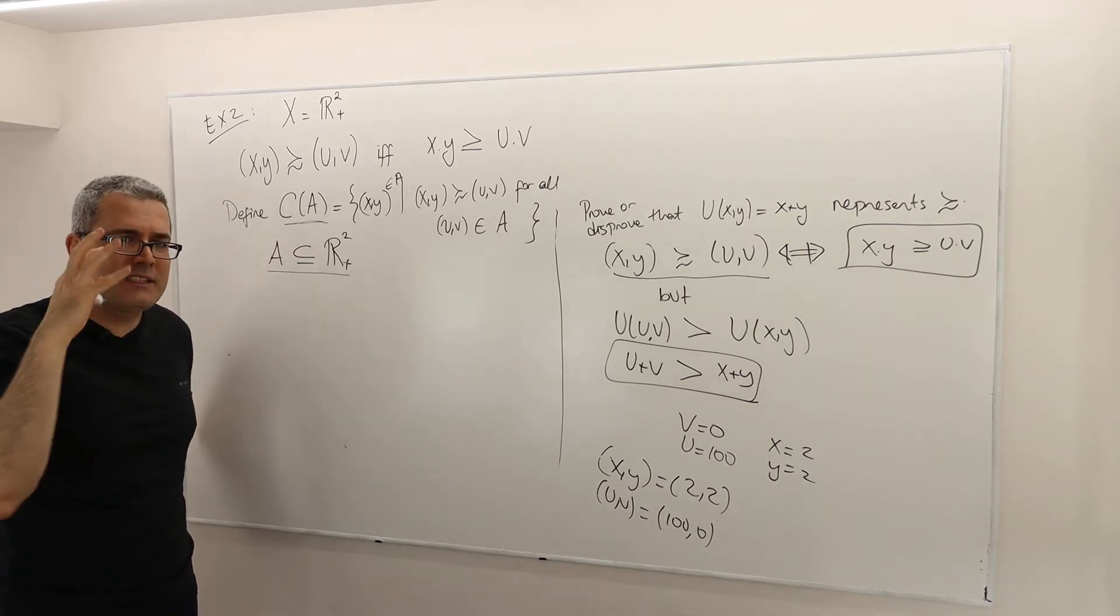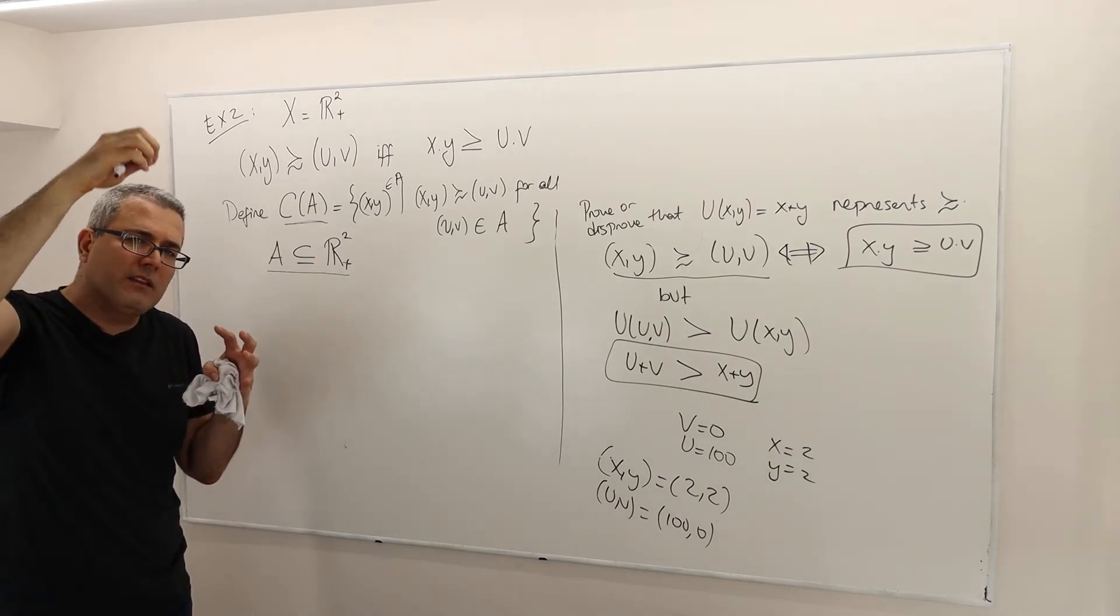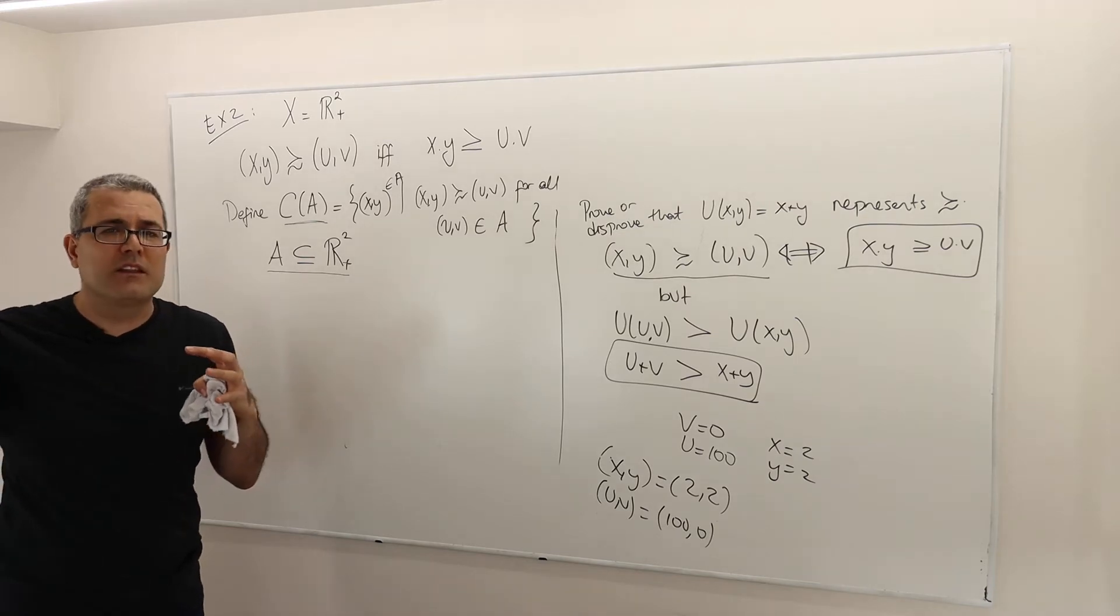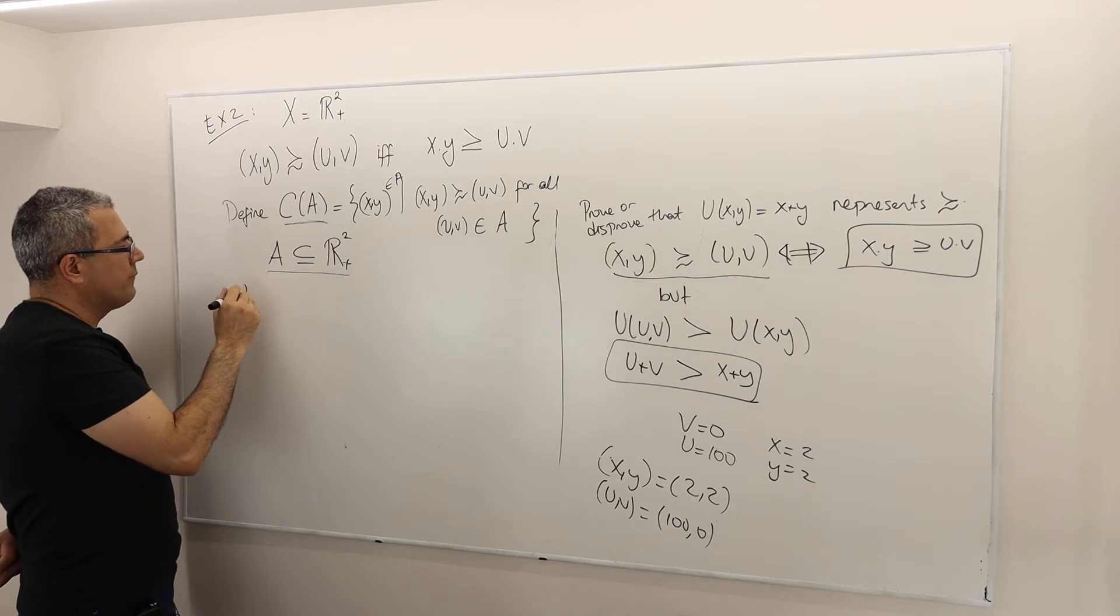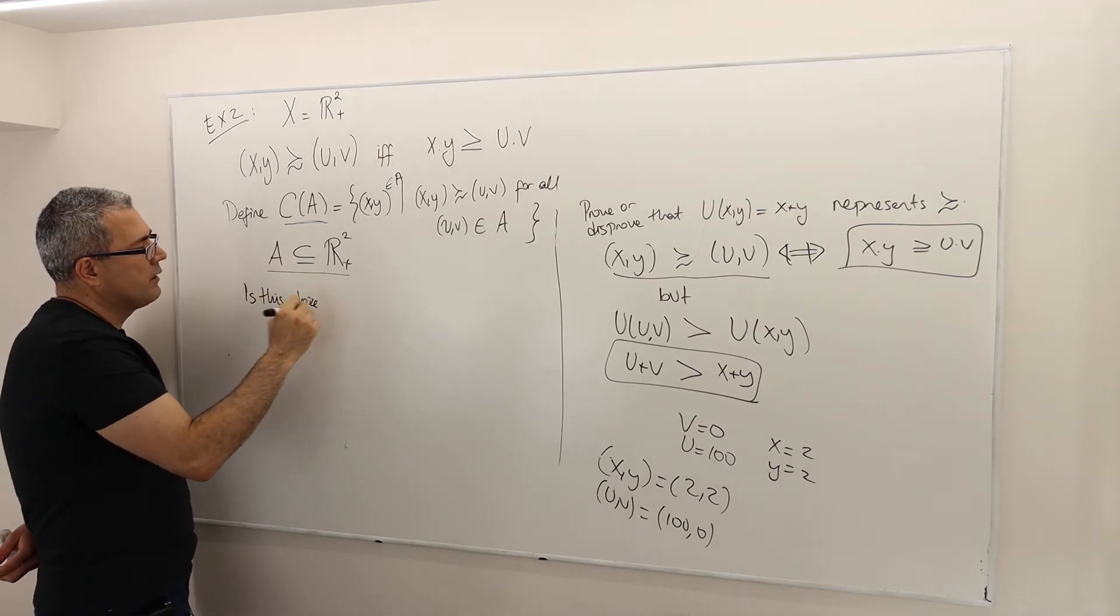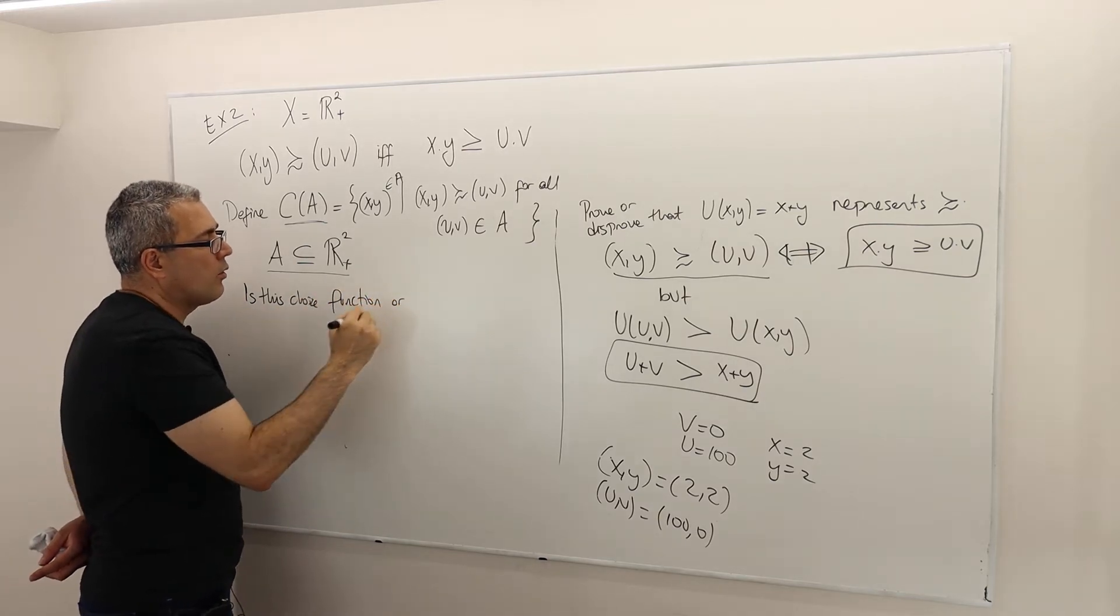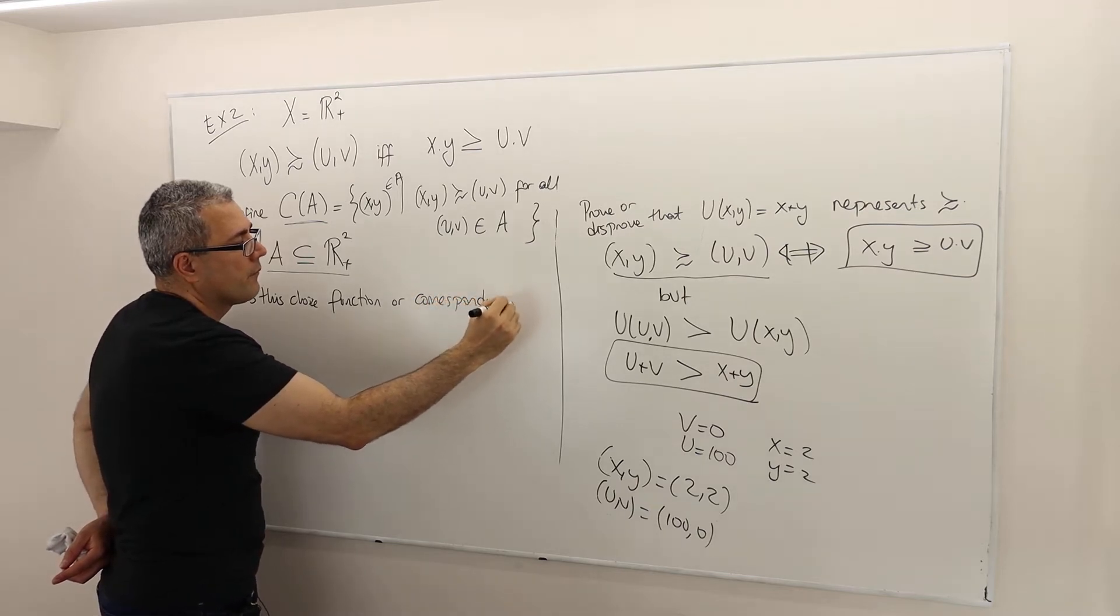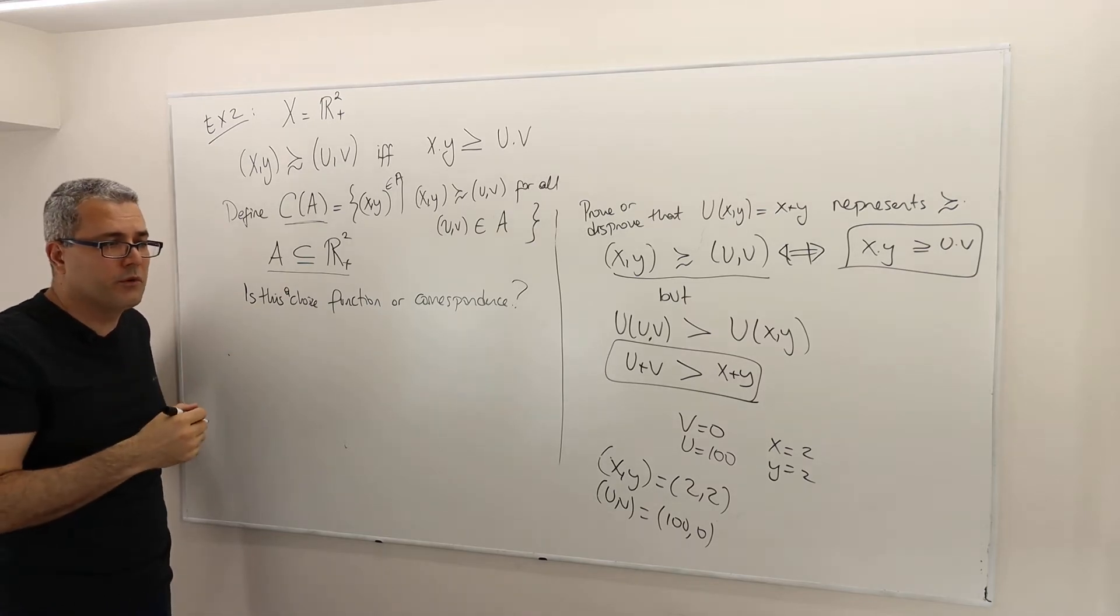So look in a set and within this set, always choose the bundle that is at least as good as every other bundle. Question is, is this choice function, is this a choice function or a choice correspondence?